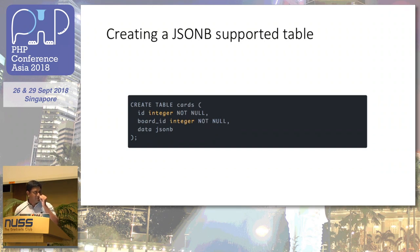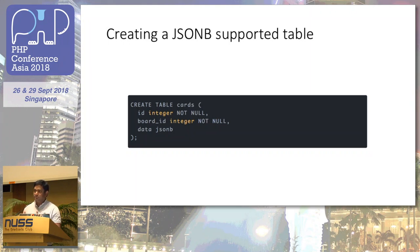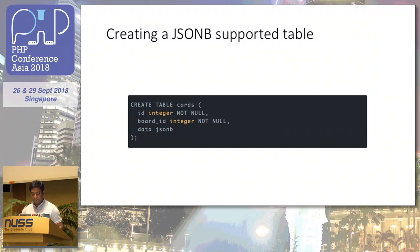Looking at the example of Trello: Trello has a card structure where we move cards, and each card has descriptions, to-dos, and lots of things. Traditionally designing such a solution might be very complicated because you end up with lots of tables — one table for cards, one for tags, one for to-dos — and at the end you have to use joins to find that data together. So we're creating a simple cards table to show how it can be mixed and matched with traditional practices and with JSON.